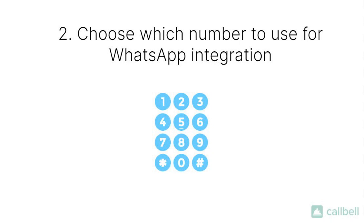At this point you will need to choose which number you would like to use for your WhatsApp integration. You will be able to use any number on which, at the end of the process, you will be able to receive a WhatsApp verification code either through an SMS or a phone call. This means you will also be able to integrate landline numbers.